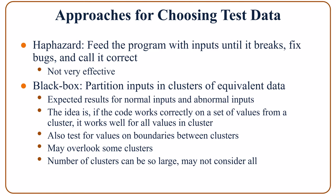In the black box approach, we partition the inputs into several clusters — we may have clusters with normal inputs and clusters with abnormal inputs. At the output, we would get expected results for both normal and abnormal inputs. The idea is that if data within each cluster is similar, and the code works correctly for one set of values in a cluster, it would work for other values in the same cluster as well. Values on the boundaries between clusters are also tested. However, we may overlook some clusters, and the number of clusters may be very large.